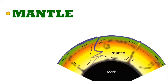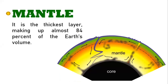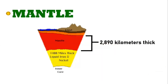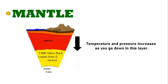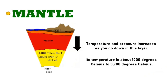Beneath the crust is the mantle. It is the thickest layer, making up almost 84% of the Earth's volume. It is about 2,890 kilometers thick. As you go down to this layer, the temperature and pressure generally increase. Its temperature is about 1,000 degrees Celsius to 3,700 degrees Celsius.